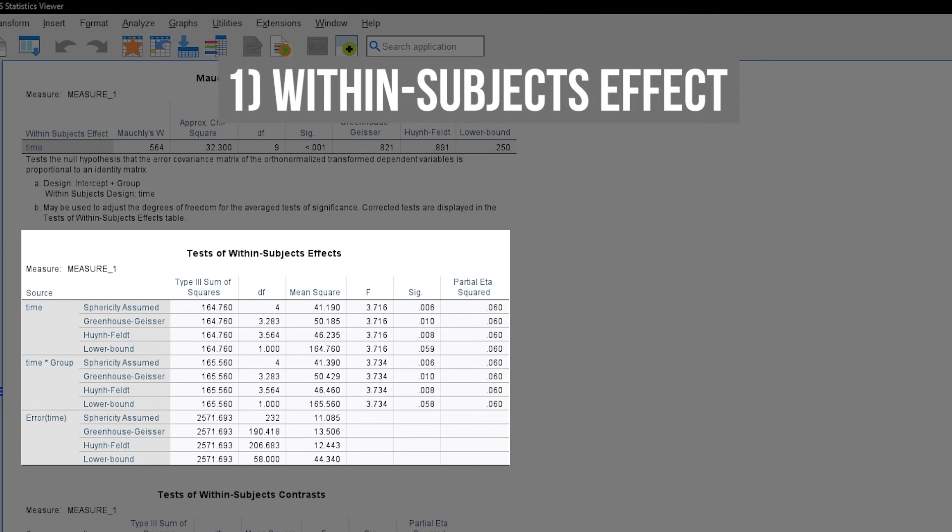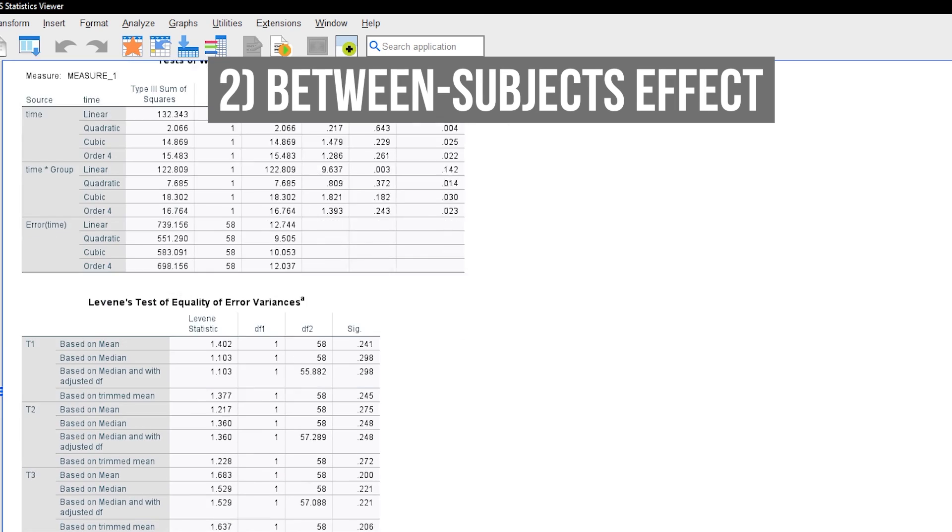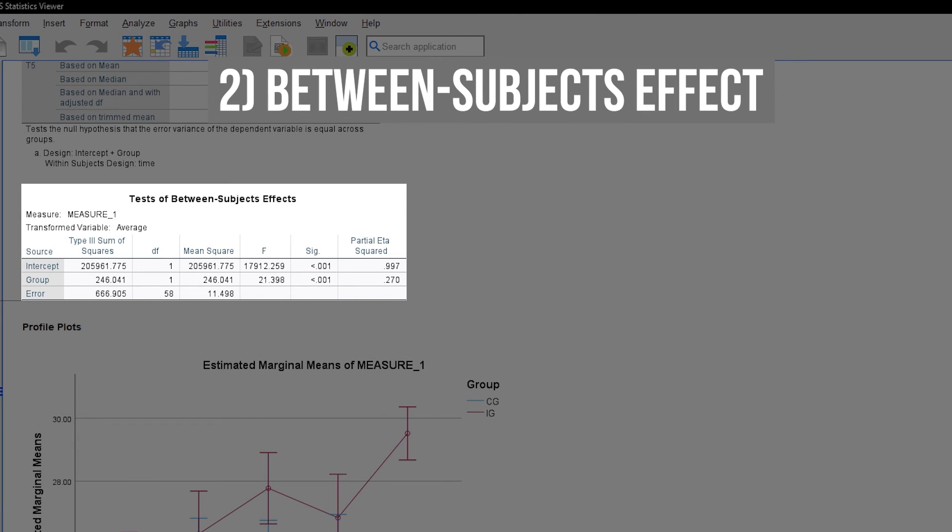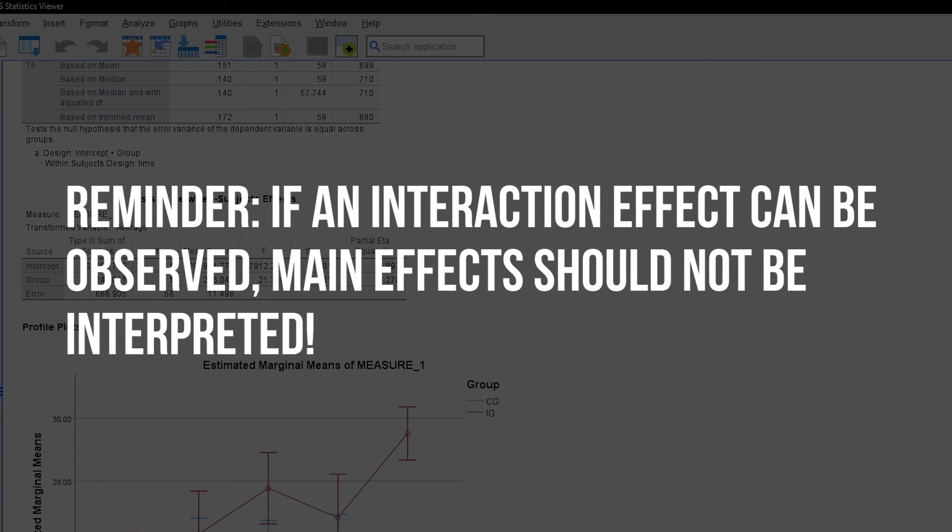First, the between subjects effect from the table tests of between subjects effects would also be sufficiently small with a p-value smaller than 0.001. Therefore, we would be able to observe differences between groups, neglecting the repeated measures. Reminder, since the interaction effect can be observed, I will ignore the main effects.